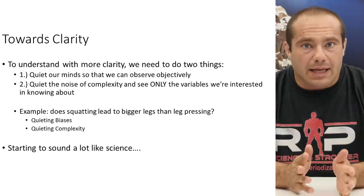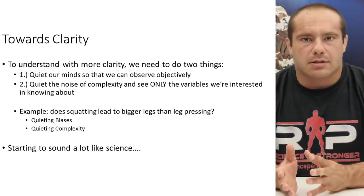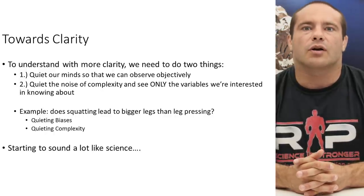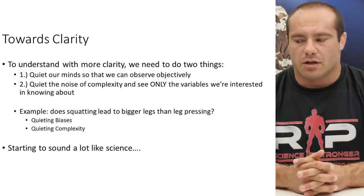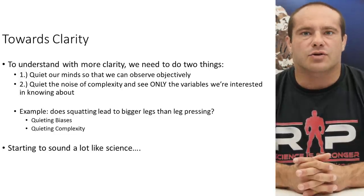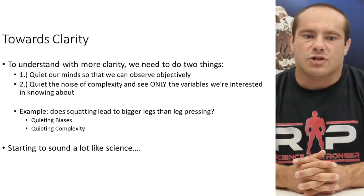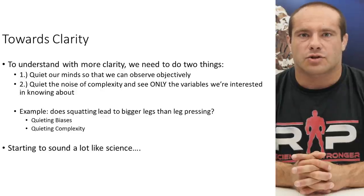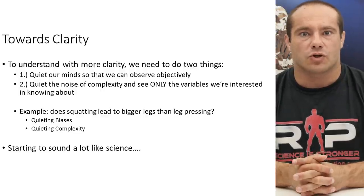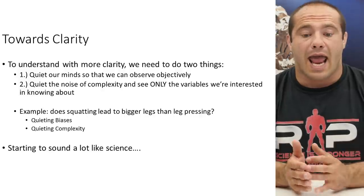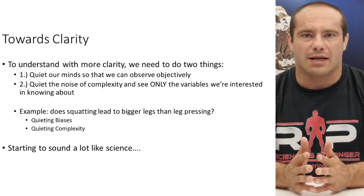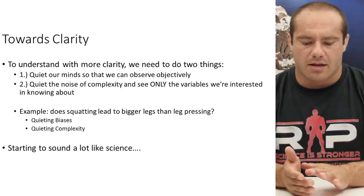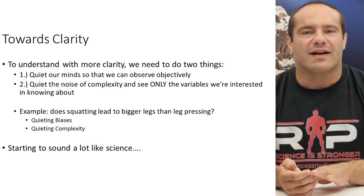We also want to quiet the noise — the complexity — so that we can see only the variables we want to know about. Very complex situations with variables going every which way make it really difficult to assess what's actually going on. We want tools to quiet our minds so we can perceive more accurately, and quiet the surroundings so we can perceive one effect at a time.